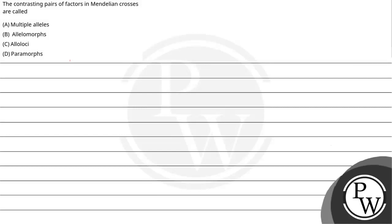Hello, let's see this question. The question says the contrasting pairs of factors in Mendelian crosses are called: